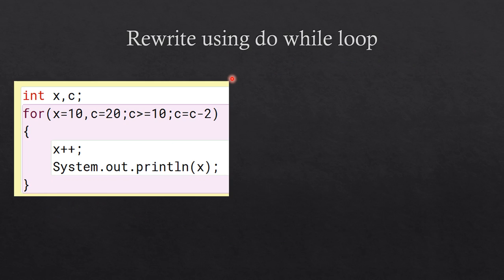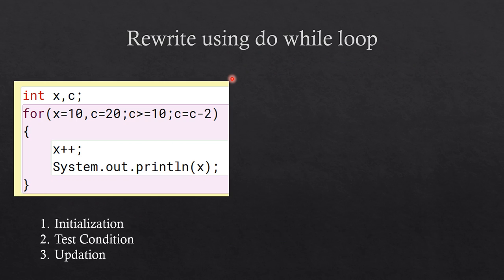The first example: a for loop snippet is given and you are going to convert it to a do-while loop. You should remember three things — one is the initialization statement, then the test condition, and then the updation statement. Here you can see two variables x and c, and they have been initialized in the for loop. So x equal to 10 and c equal to 20 are the initialization statements.